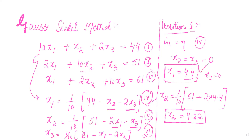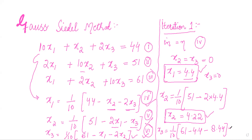With x1 equal to 4.4 and x2 equal to 4.22, we go to equation 6 to find x3: x3 equals one-tenth of 61 minus x1 minus 2 times x2, that is one-tenth of (61 minus 4.4 minus 8.44) equals one-tenth of 48.16, giving x3 equals 4.816.